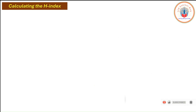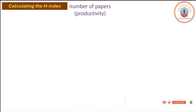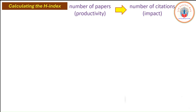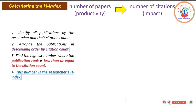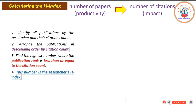To calculate the H-index, two things are needed: all the papers the author has written — known as productivity — and the citations those papers have received — known as impact. The steps are: first, collect all publication and citation details; second, arrange all papers in descending order by citation count so the most cited article is at the top; then find the highest rank number where the publication rank and the citation count are the same or equal.